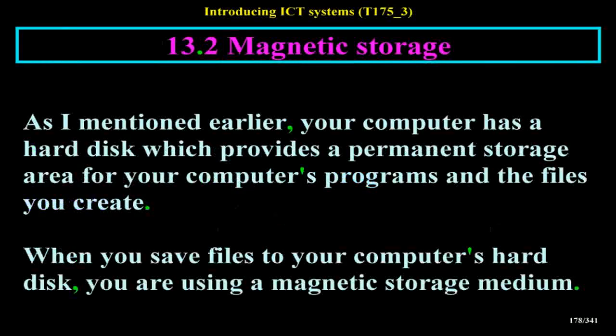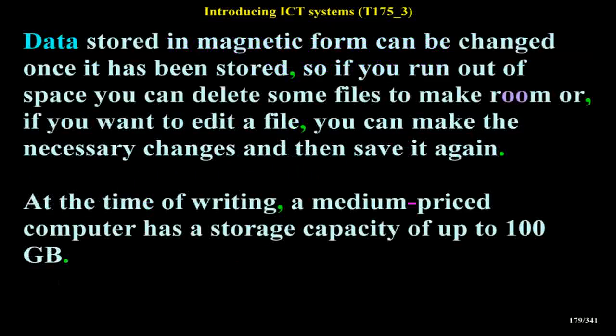Magnetic storage: your computer has a hard disk which provides a permanent storage area for your computer's programs and the files you create. When you save files to your computer's hard disk, you are using a magnetic storage medium. Data stored in magnetic form can be changed once it has been stored, so if you run out of space you can delete some files, or if you want to edit a file you can make the necessary changes and save it again. At the time of writing, a medium-priced computer has a storage capacity of up to 100 gigabytes.